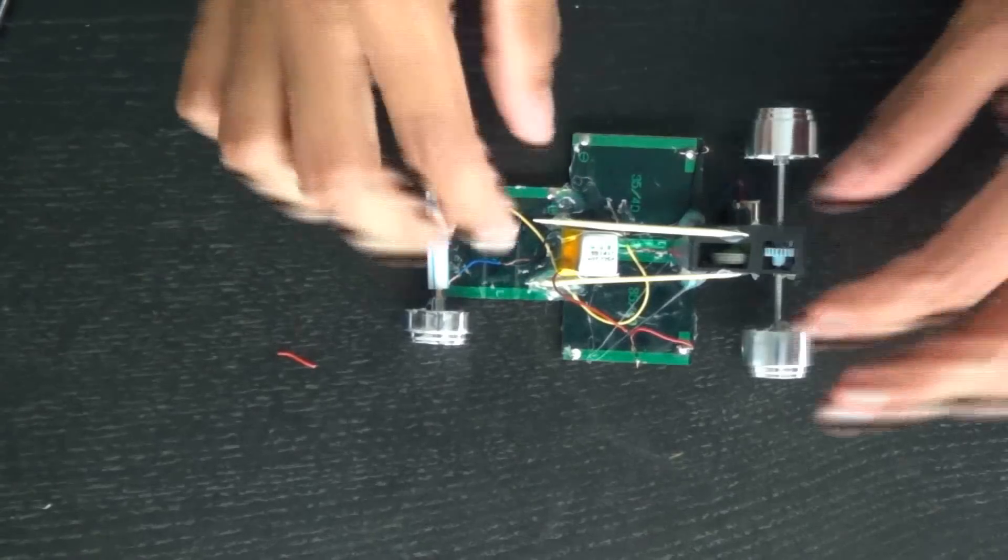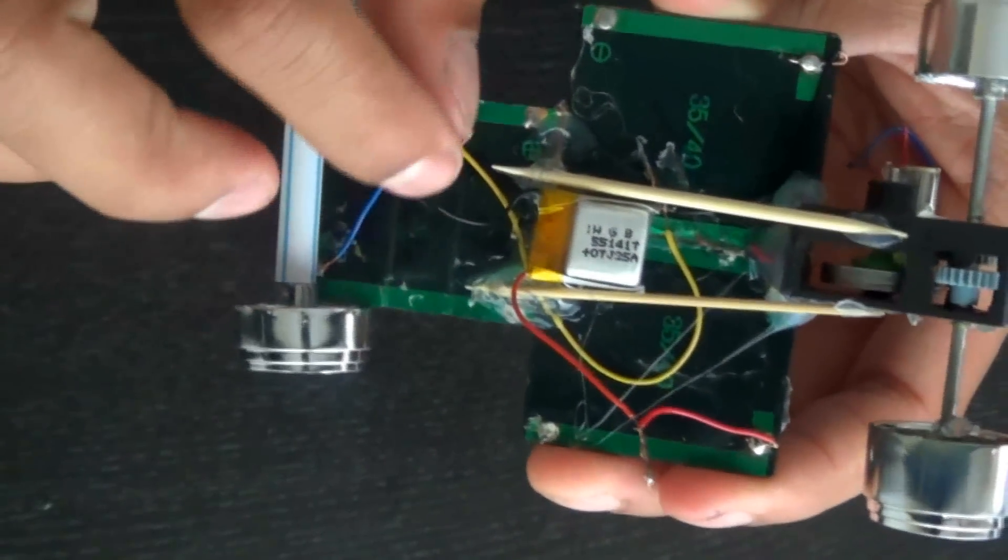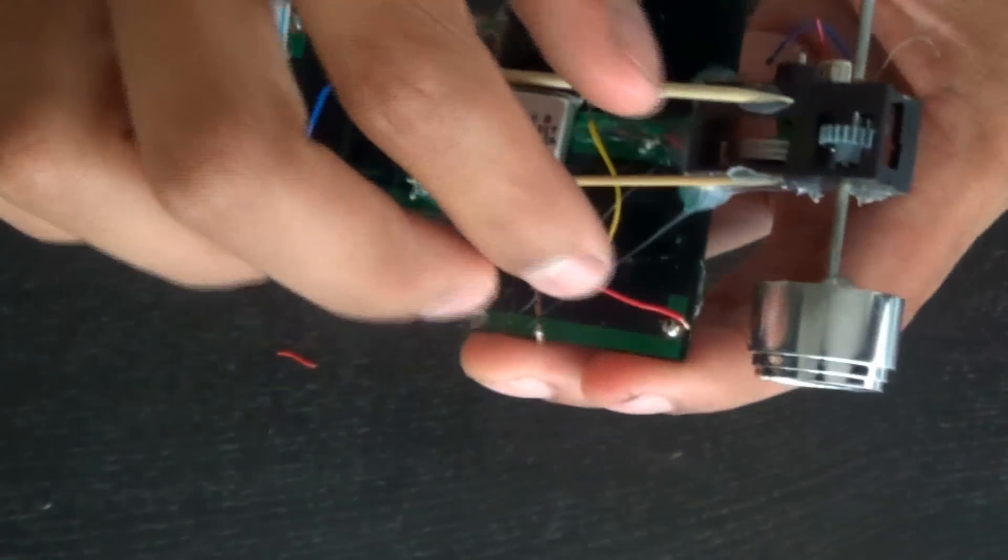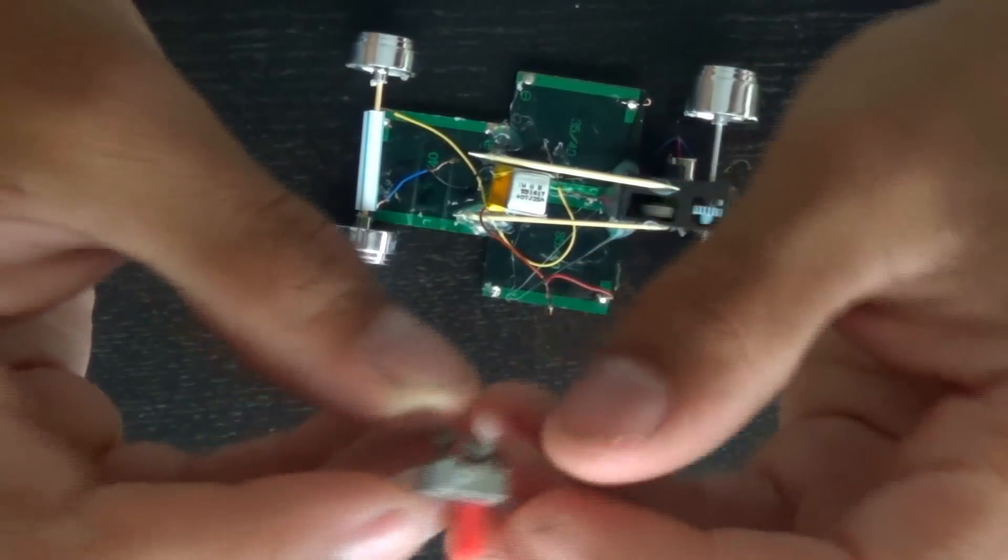I just twisted the wires together - positive of the battery to positive of the solar panel, negative of the battery to negative of the solar panel. That basically allows us to charge the battery with the solar panel.